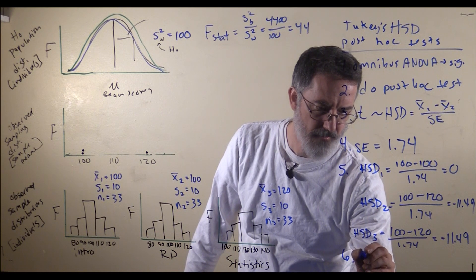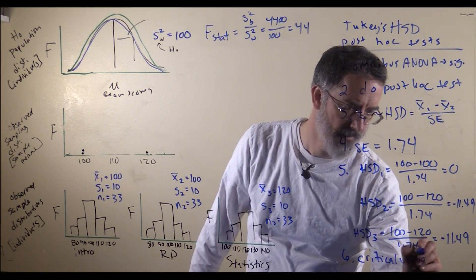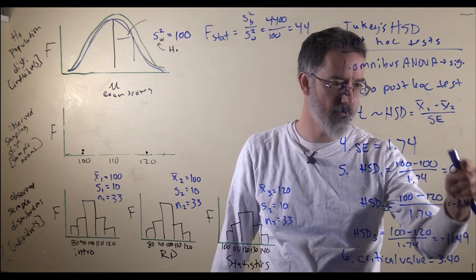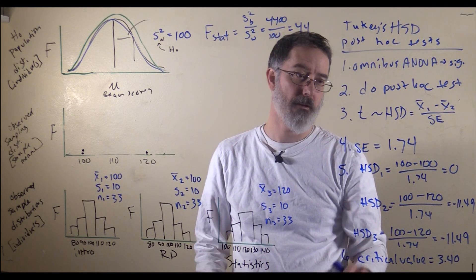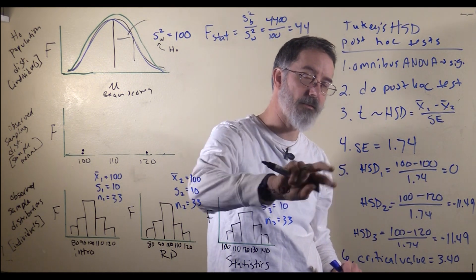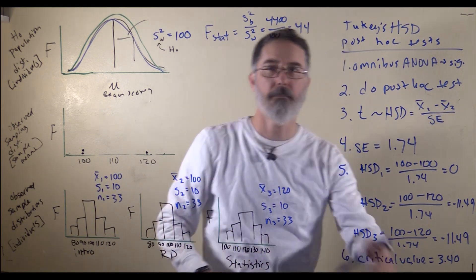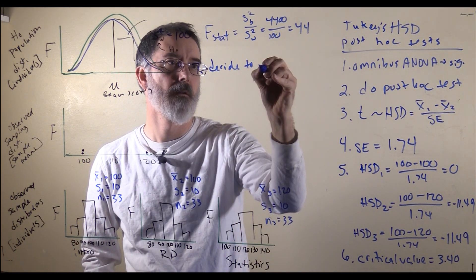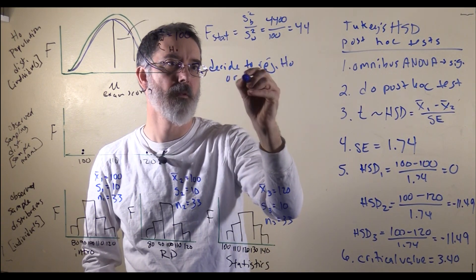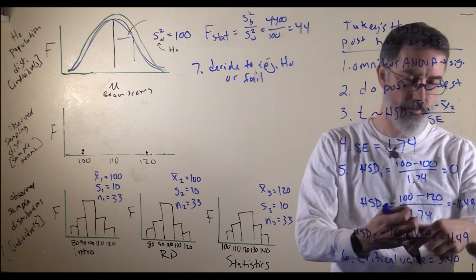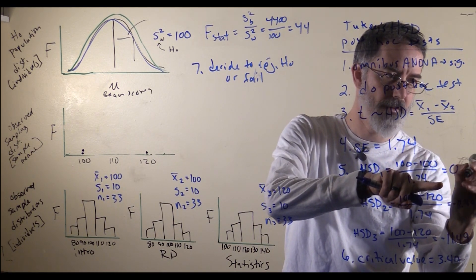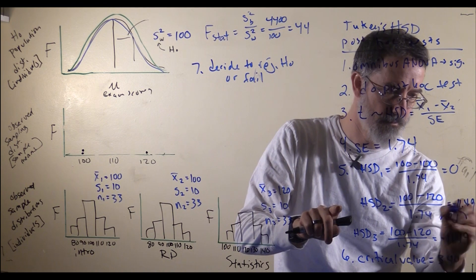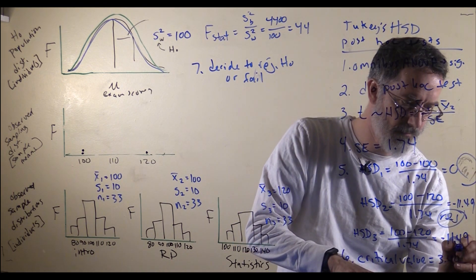The next thing we need to do is look up the critical value in the table. I did that earlier, and for this test it was 3.40. Any HSD values more extreme than 3.40, we are going to reject the null hypothesis that these are the same. Notice we are really treating these as having three separate null hypotheses at this point. We got our critical value. For each we decide to reject the null hypothesis or fail to reject it. Here we would fail to reject that one because it is less extreme than 3.4. This one we would reject. This is more extreme, we would reject the null hypothesis here as well.